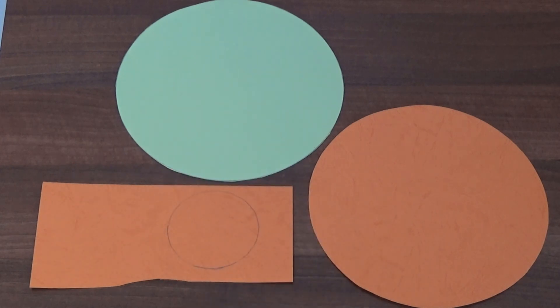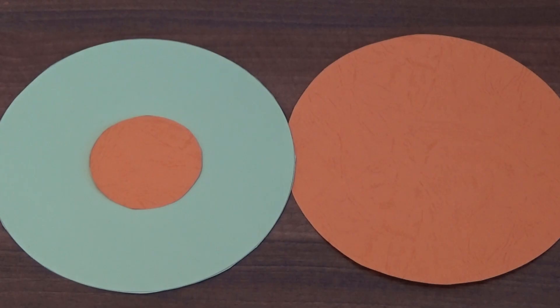The next thing I need to do is cut out the smaller circle. I now have two larger circles for the bottom of the wheel and a small one for the middle.